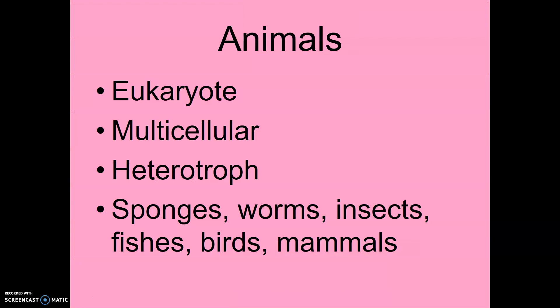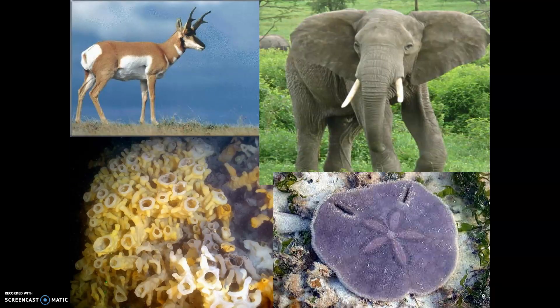Animals are eukaryotic and multicellular, and all are heterotrophic. Examples include sponges, worms, insects, fish, birds, and mammals — we can list tons of animals here. Even a sponge and sand dollar — they don't seem like they would be, but they are animals.